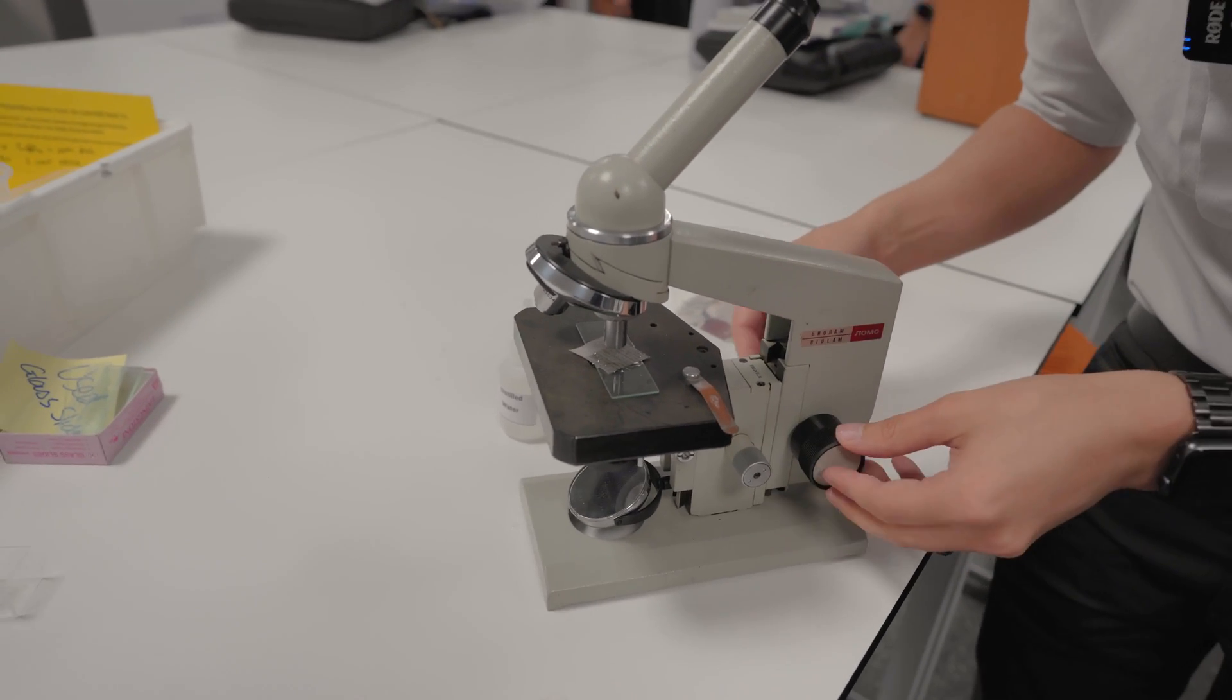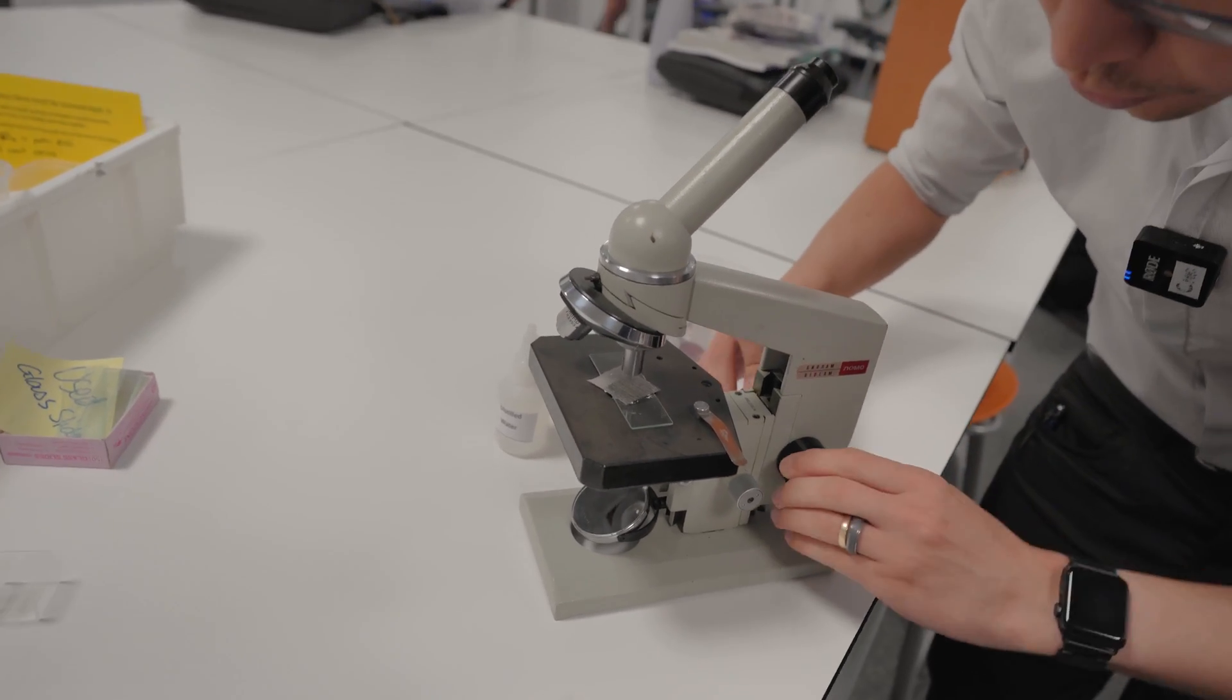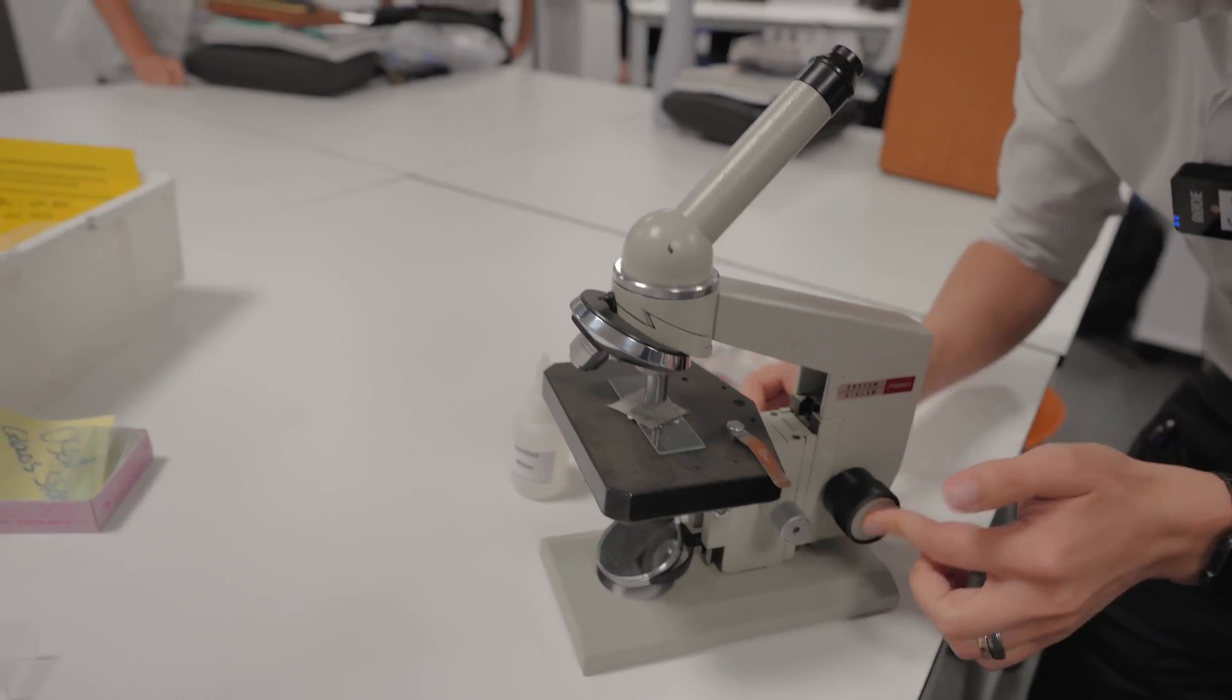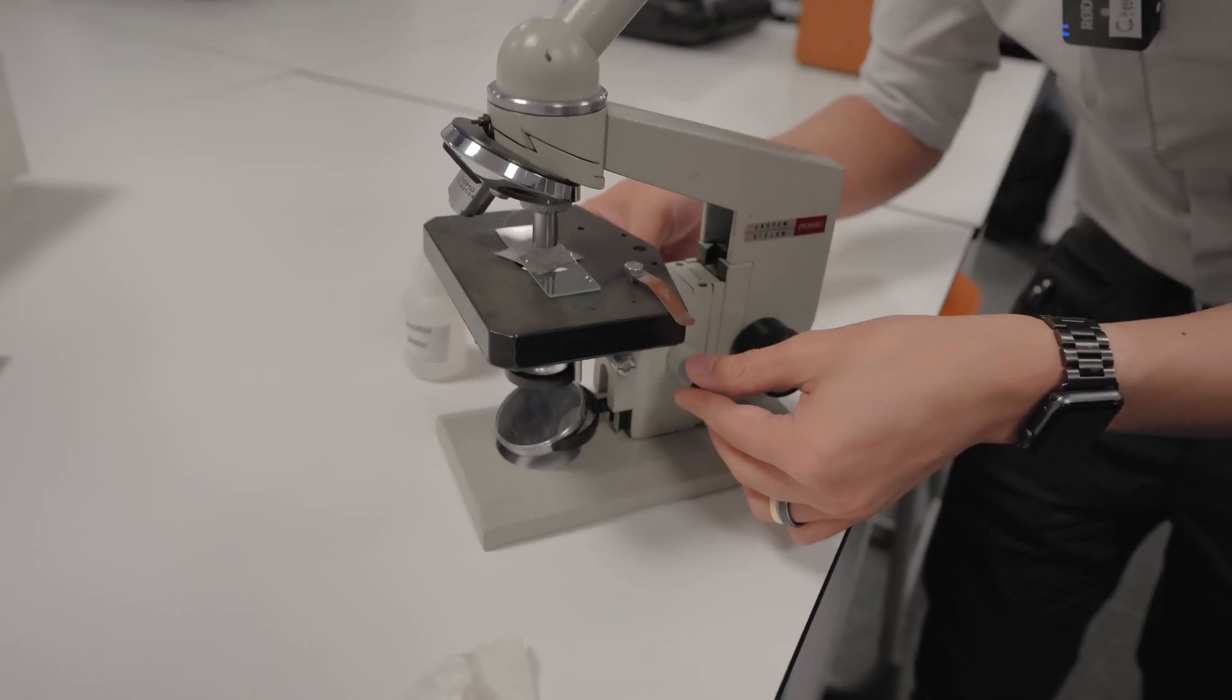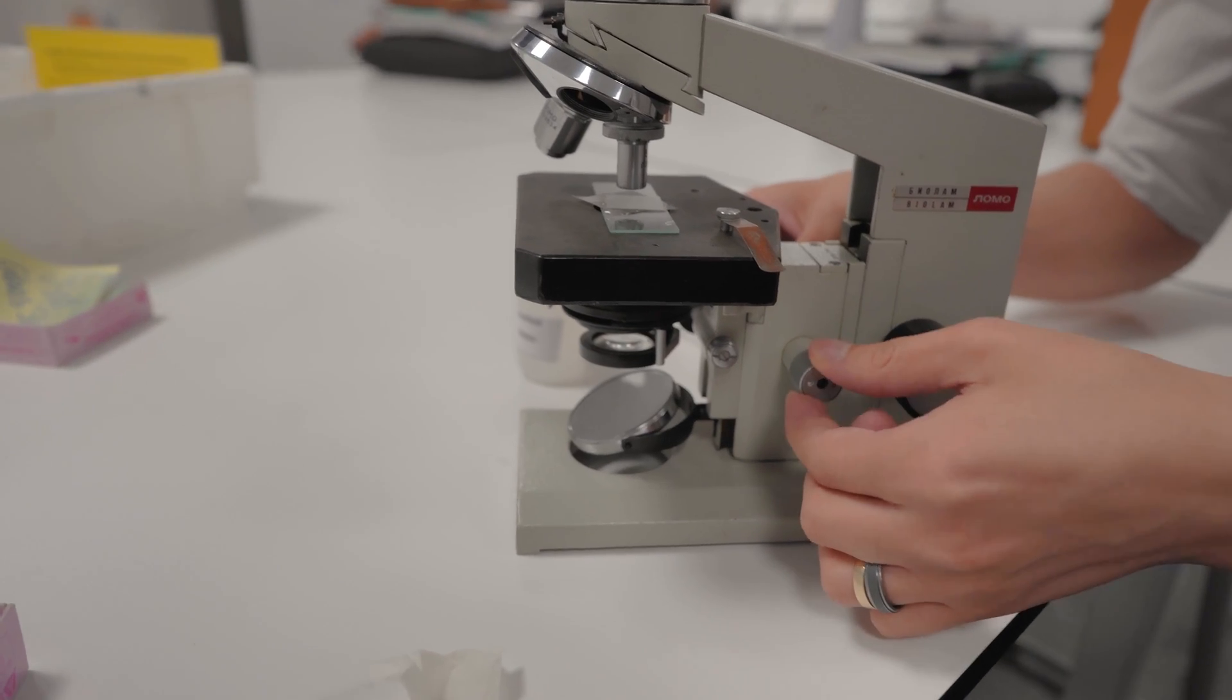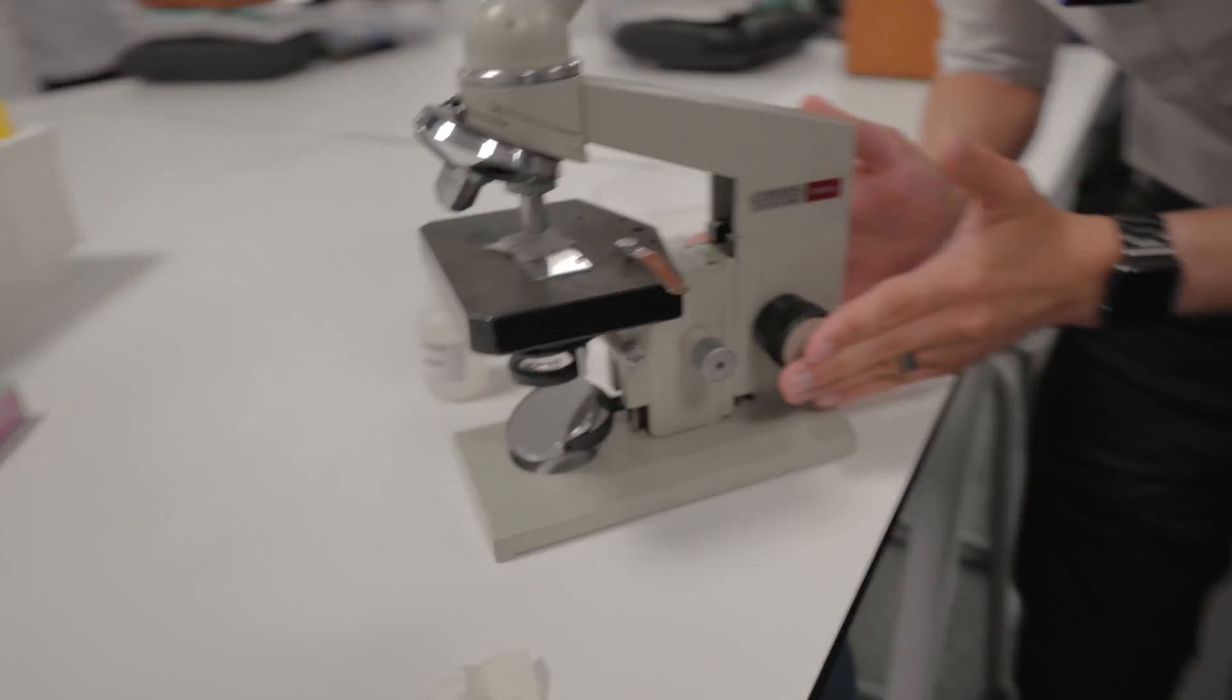Whichever the bigger knob is that's the coarse focus knob. That's used to make large changes. If I turn them they move a large amount and then once you've found roughly where your focus is at you can turn your attention to the narrower knobs. These are the fine tuning knobs and you use this for fine adjustment and then you should have your specimen.